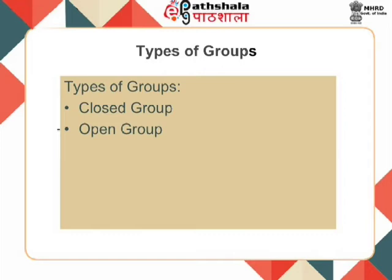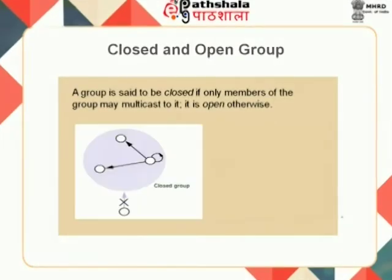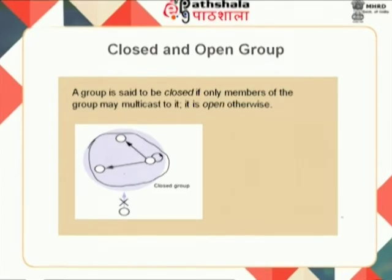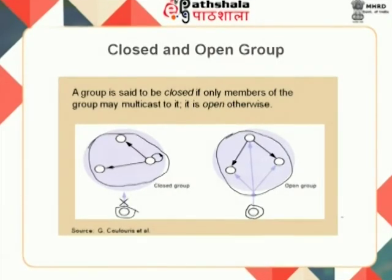Now let us see what are the types of groups. The first types are closed group and open group. In a closed group, all the processes inside the group can communicate with each other, but any process outside the group is unable to communicate with processes inside. Whereas in an open group, the processes within the group can communicate freely with each other, and also any process lying outside is able to send messages to one or more participants of the group.